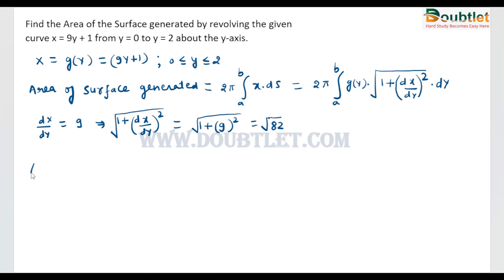Now after putting the value, the area of surface generated will be 2π times root 82 times (9y plus 1). Then the limit will be from 0 to 2.